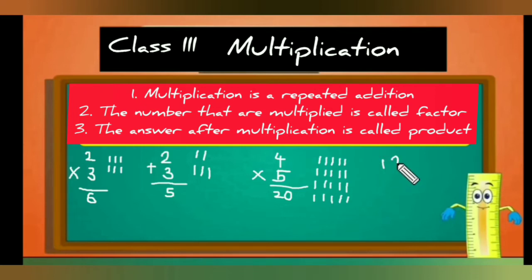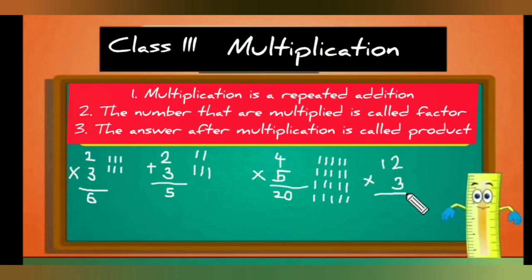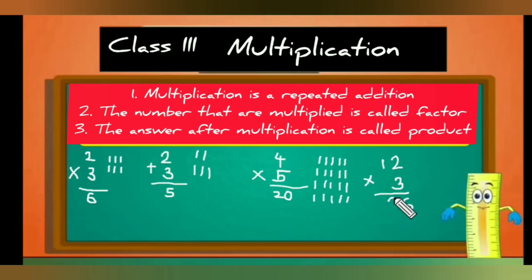Now let's see two-digit multiplication. For example, 12 multiplied by 3: three two's are six, and three ones are three — so the answer is 36.